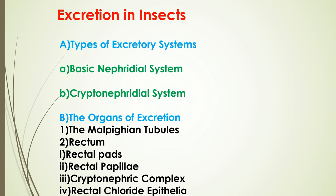In the basic nephridial system, found in a large number of insects, the distal ends of Malpighian tubules are freely bathed in hemolymph. The tubules absorb various waste substances as well as salts and water from hemolymph and then discharge into the hindgut. The superior or anterior tubules in Cereus, Dacus, and Drosophila bear distinct dilations at their distal ends.